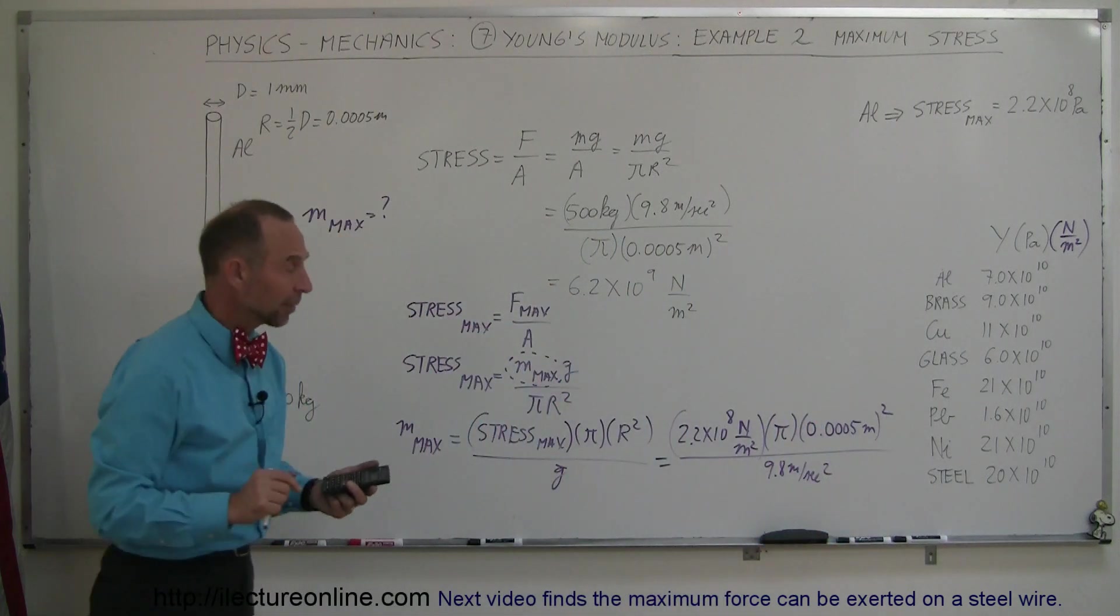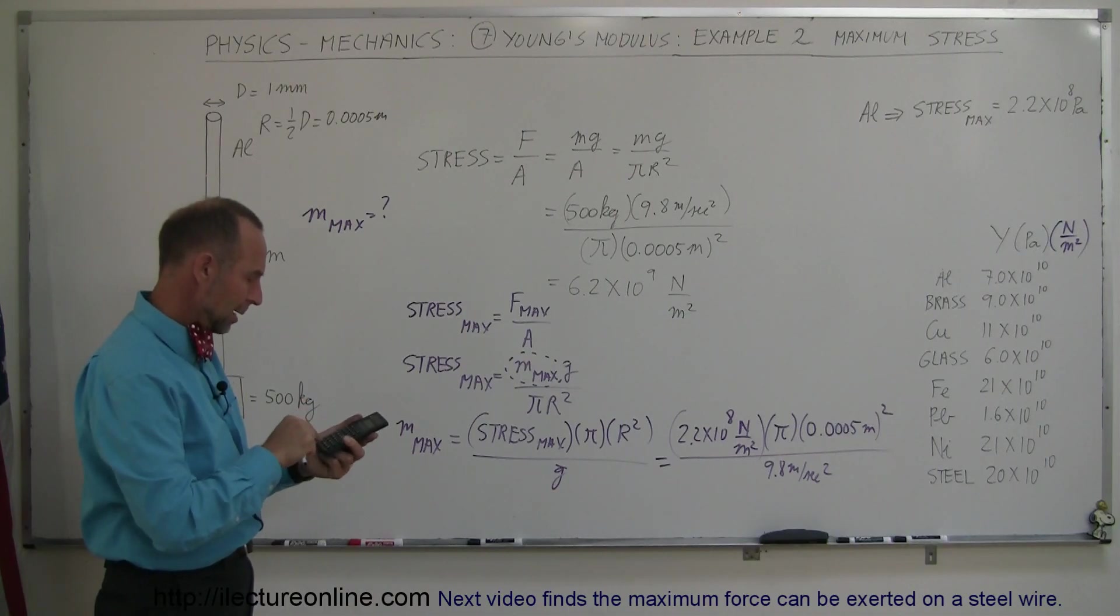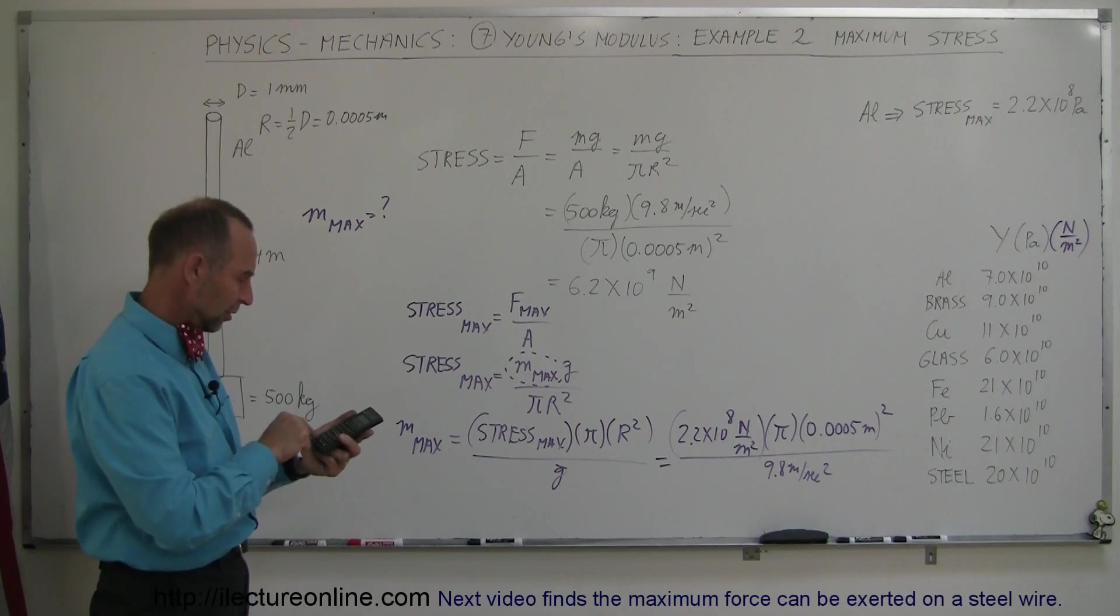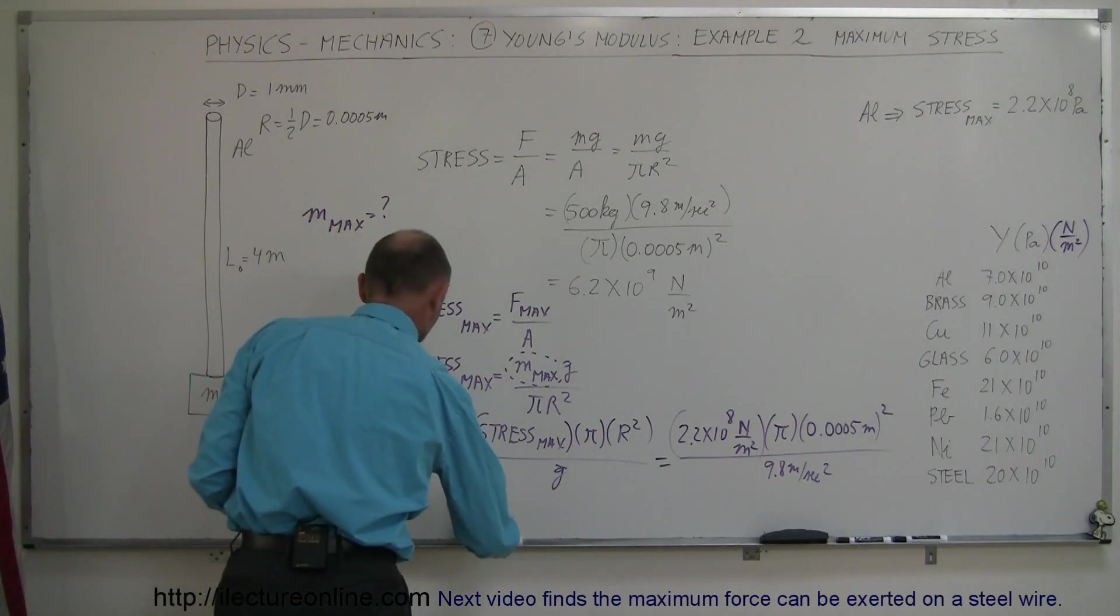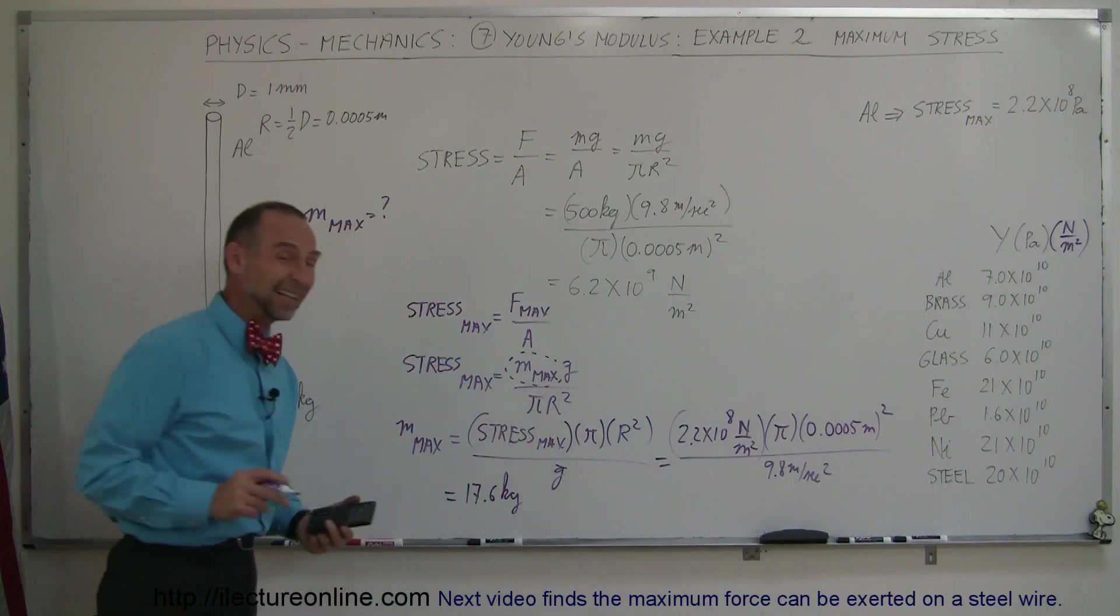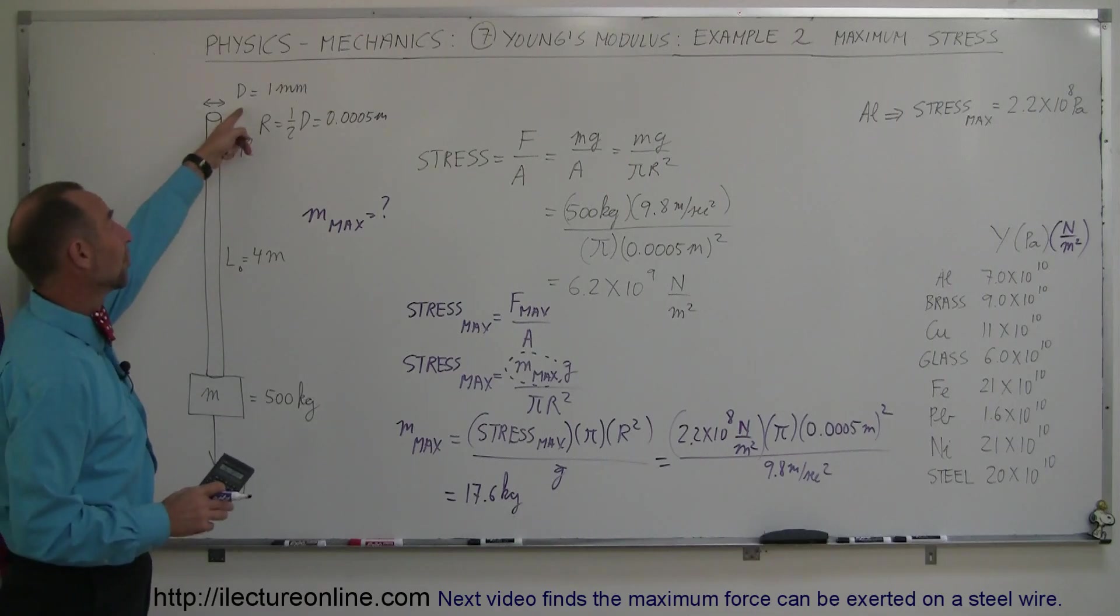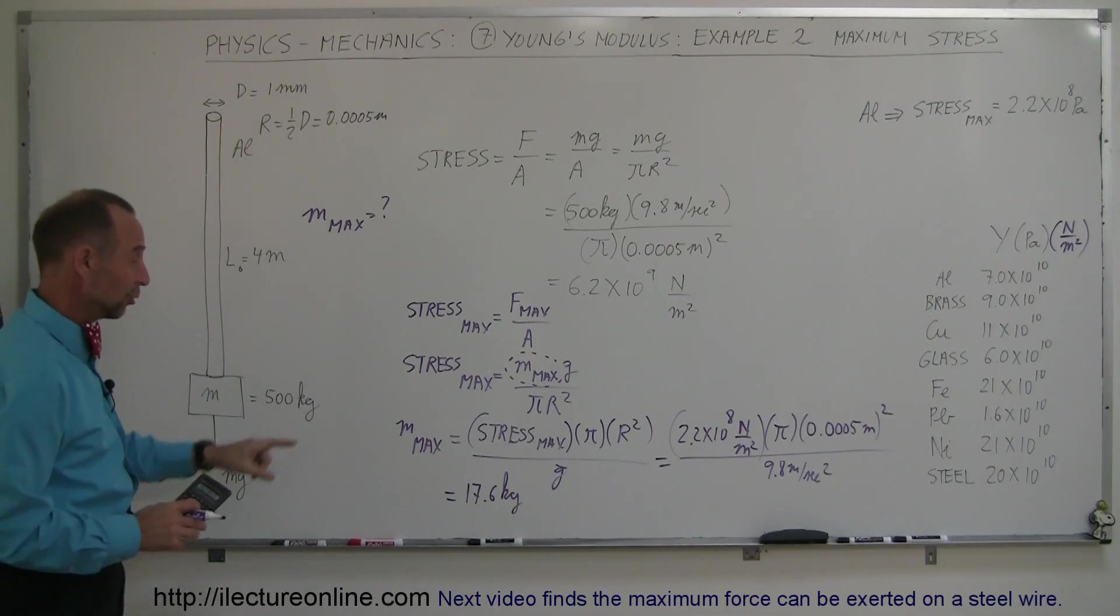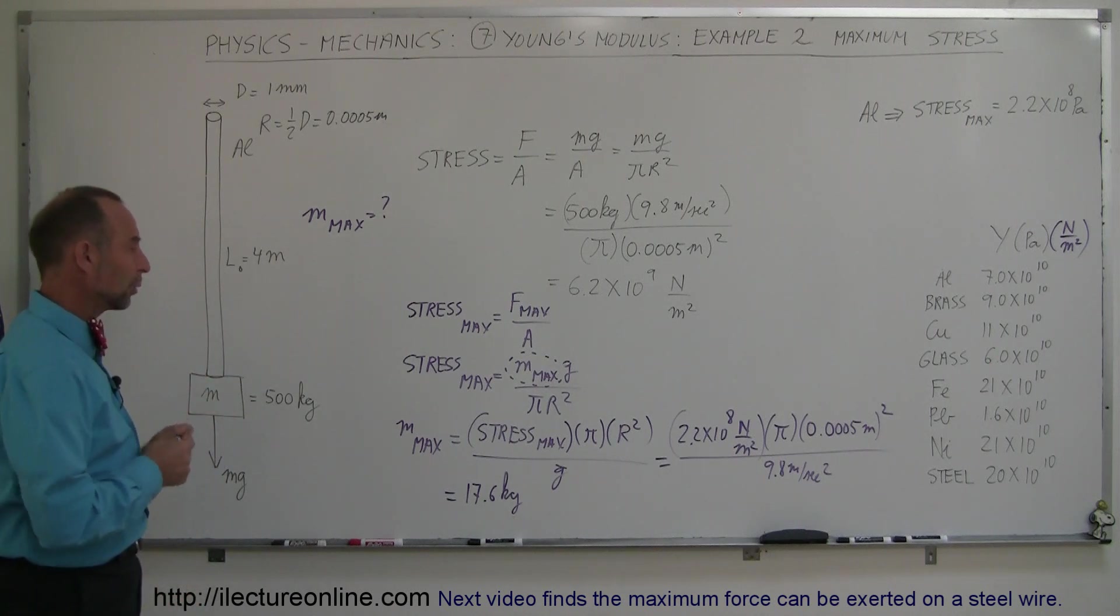Alright, so how big of an object can we hang from that wire? 2.2 e to the 8 times pi times 0.0005 squared divided by 9.8 equals, and it says, 17.6 kilograms, which is slightly less than 40 pounds. So, you have a wire made out of aluminum with a diameter of 1 millimeter, which is not very big. Do not hang more than about 40 pounds or about 17.6 kilograms on it, or the wire will break.